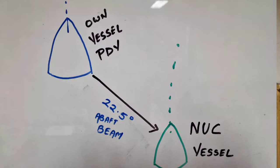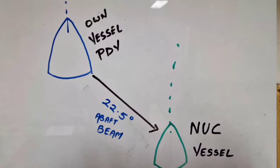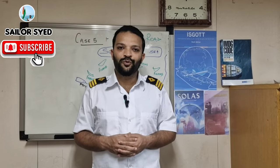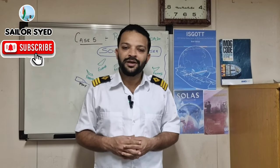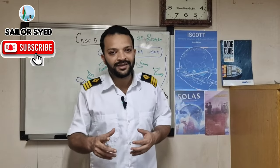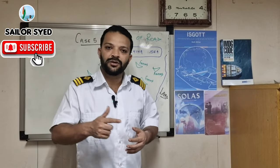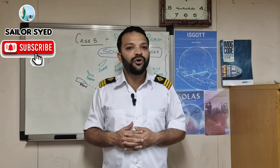Case number five: you are on a power driven vessel and a NUC is overtaking you from 22.5 degrees abaft the beam. What action should be taken, whose duty is it to keep clear, and as per which rule? In all cases, risk of collision exists.